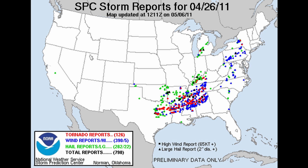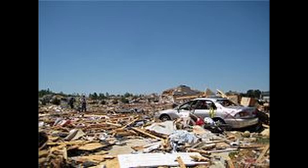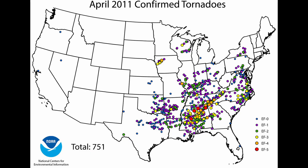On April 26th, the storm system strengthened and the outbreak spread. Tornadoes were reported across a wider area, including Texas, Louisiana, Mississippi, and Alabama. Several violent tornadoes were confirmed, causing significant destruction to homes, businesses, and infrastructure. Though fatalities started to rise, the deadliest part of the outbreak was yet to come. By the end of the day, the National Weather Service had issued multiple tornado warnings, recognizing the greater potential for severe weather in the coming days.